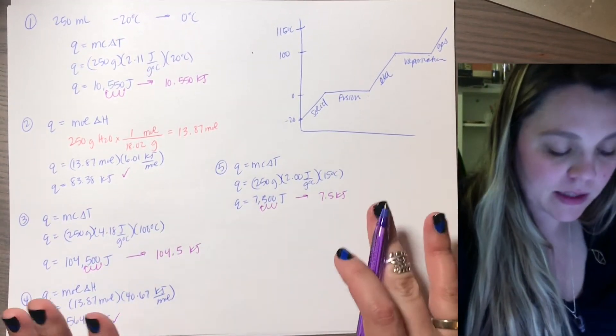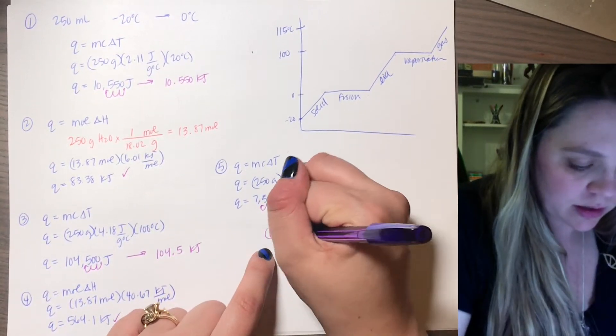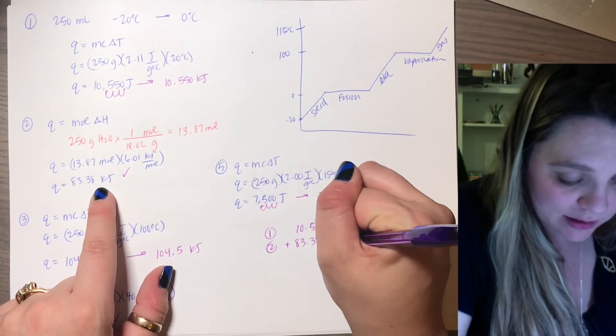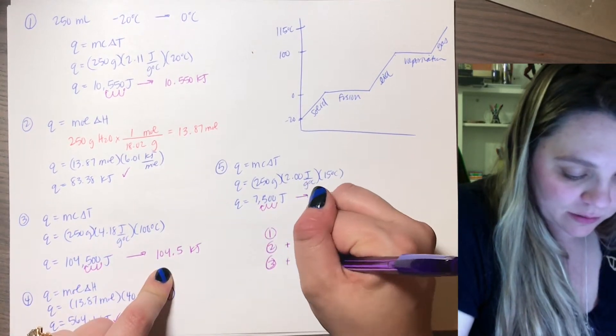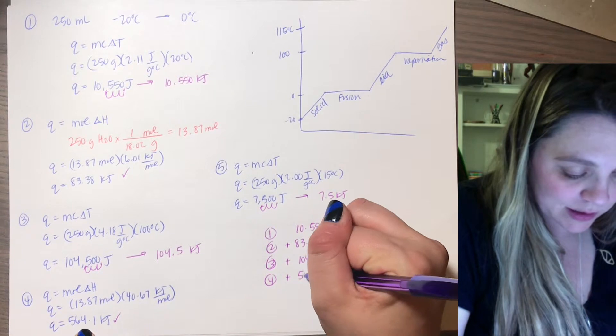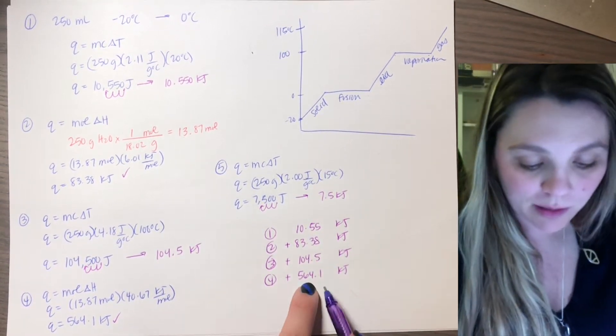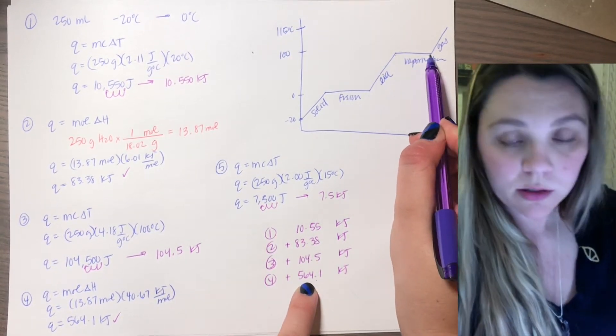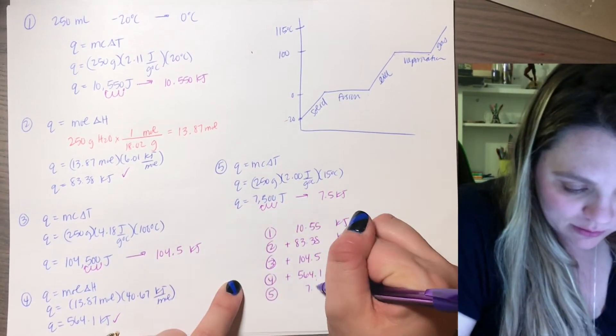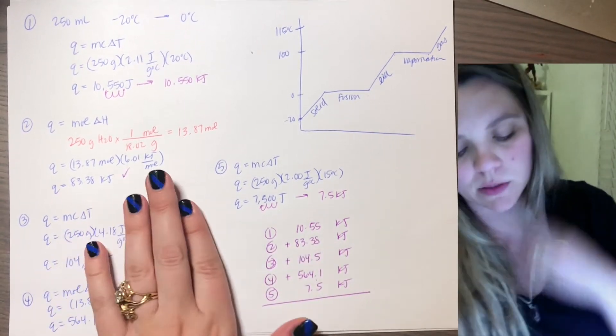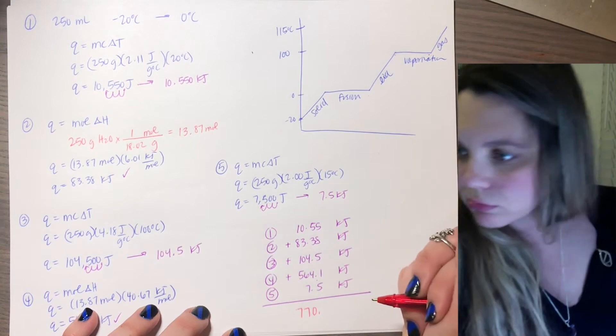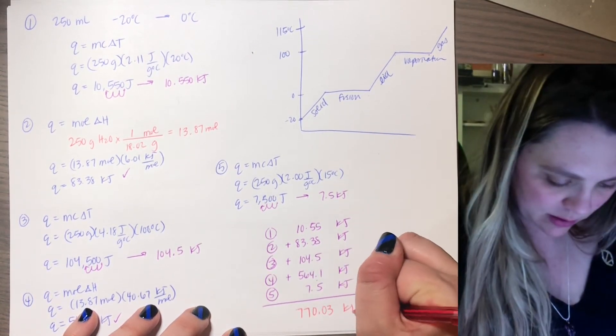Now I can add up steps one through five. Part one, I have 10.55. Part two, I'm adding 83.38. I'm adding 104.5 kilojoules for part three. Part four is the most, 564.1 kilojoules. Again, it takes a ton of energy for step four to vaporize water. Good, we do not want to have all of our water boiling away. And last but not least, 7.5 kilojoules to heat up that water vapor. Add all these wonderful numbers together and I should get an answer of 770.03 kilojoules.